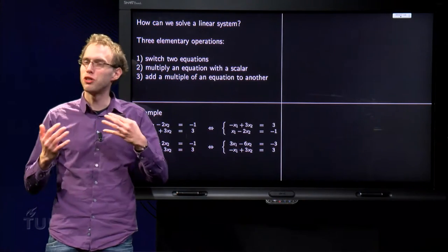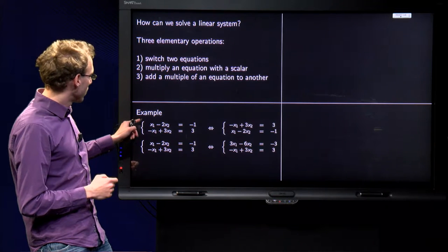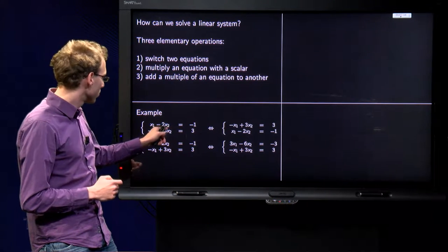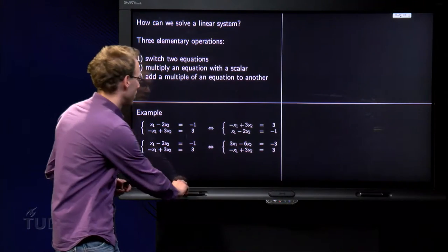So how does this work? Let's look at an example: x1 minus 2x2 equals minus 1 and minus x1 plus 3x2 equals 3.